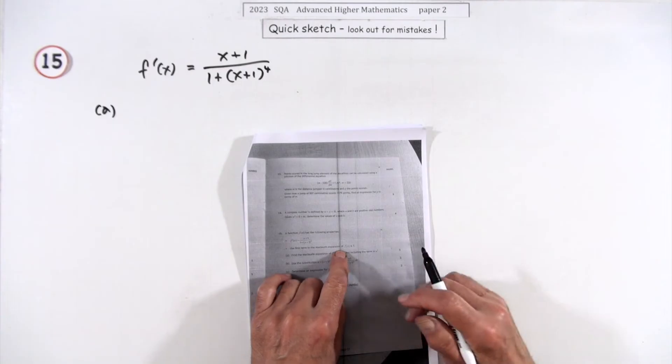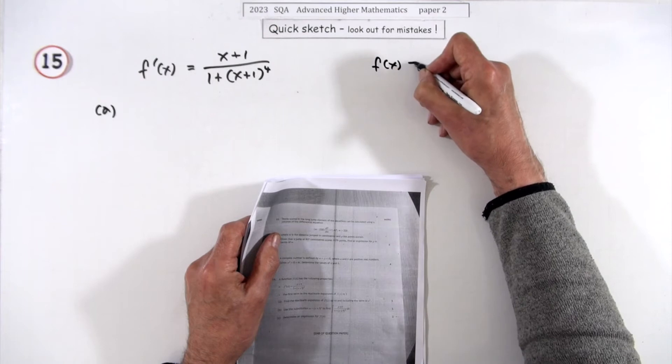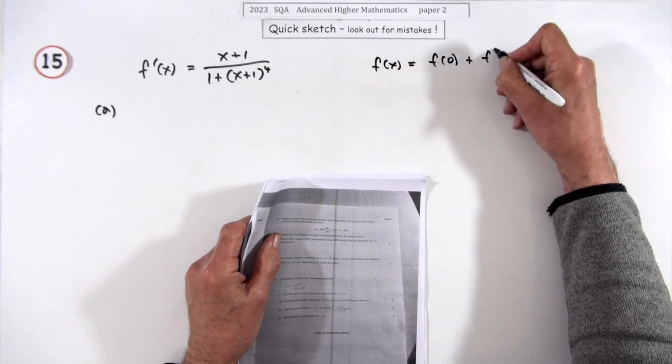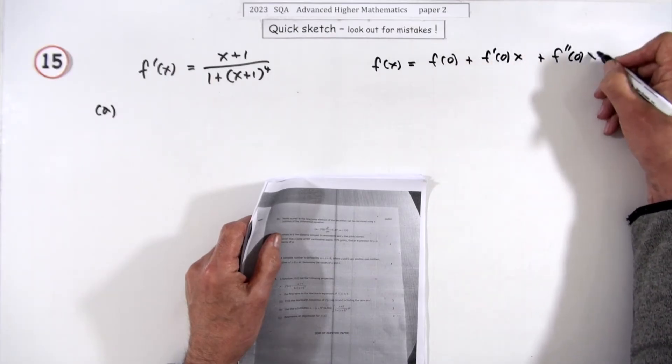The first term in the expansion of f(x) is one. Now in the expansion you would have f(0) + f'(0)x + f''(0)x²/2! and so on.